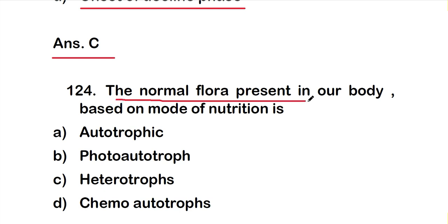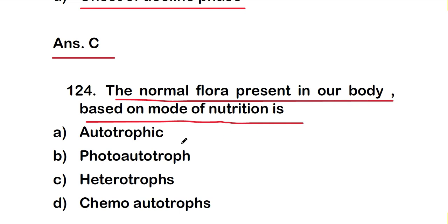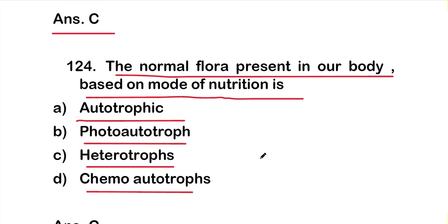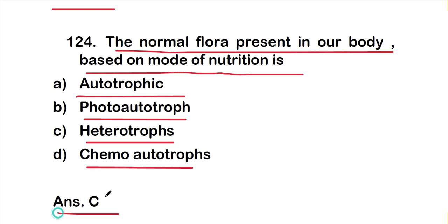Question number 124: The normal flora present in our body, based on mode of nutrition, is Option A: autotrophic, Option B: photo-autotrophs, Option C: heterotrophs, or Option D: chemo-autotrophs. The right answer is Option C — heterotrophs. The normal flora present in our body, based on mode of nutrition, is heterotrophs.